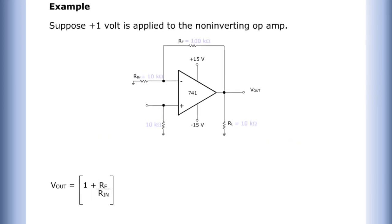For example, suppose positive one volt is applied to the non-inverting op-amp. The output voltage is determined by the following calculations.